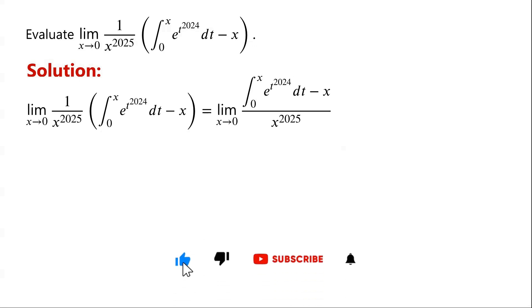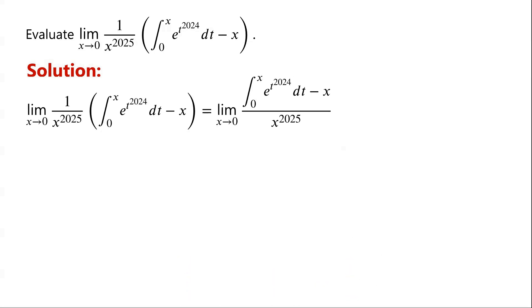It is easy to check that when x tends to 0, the denominator tends to 0, and the numerator also tends to 0. So the limit is in an indeterminate form.